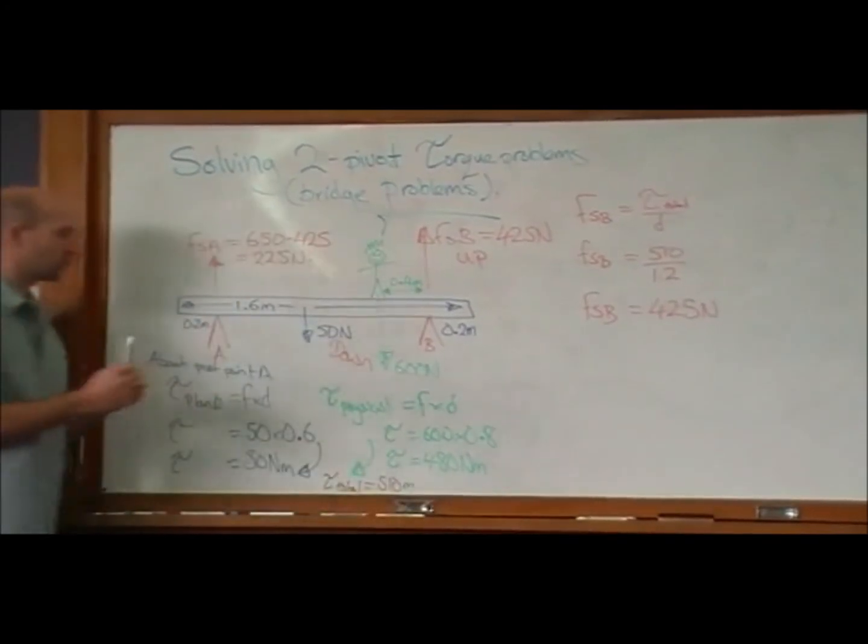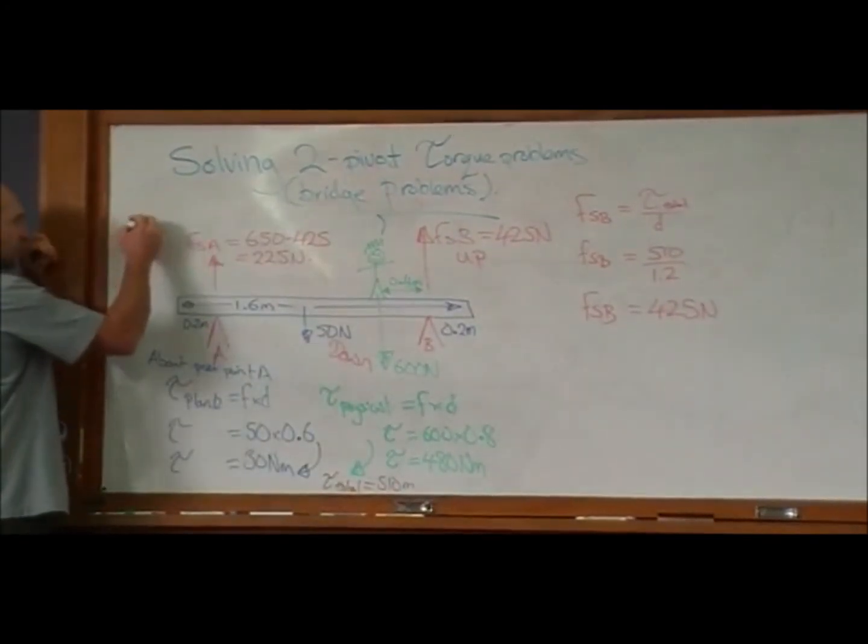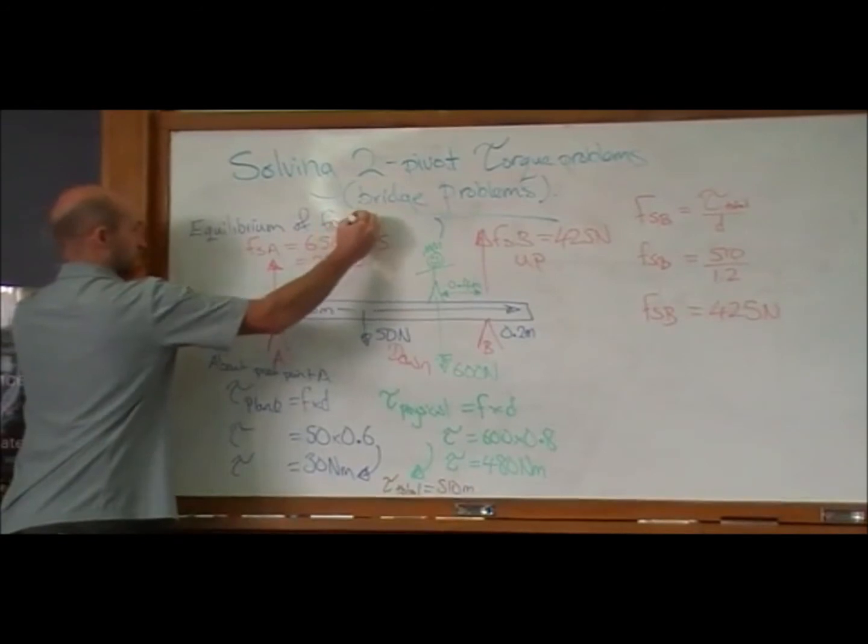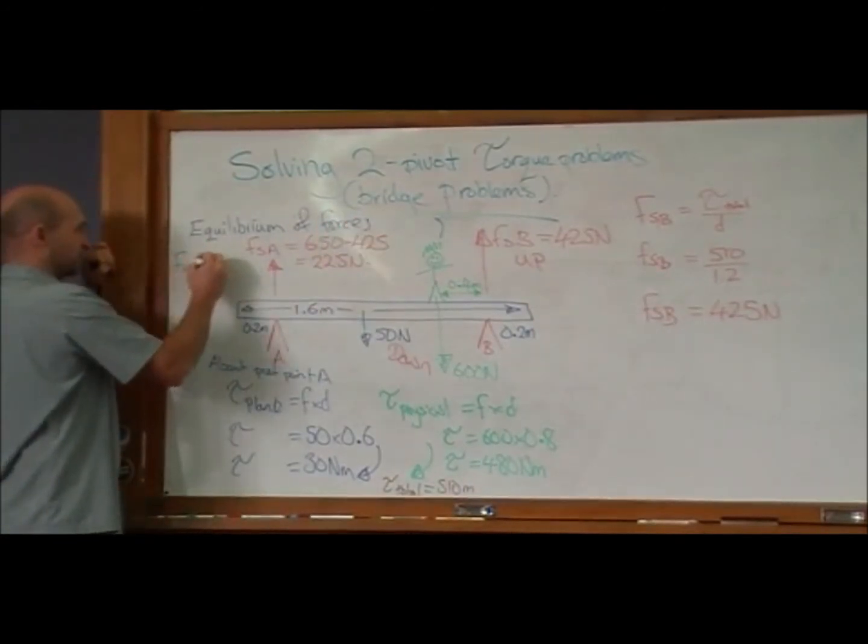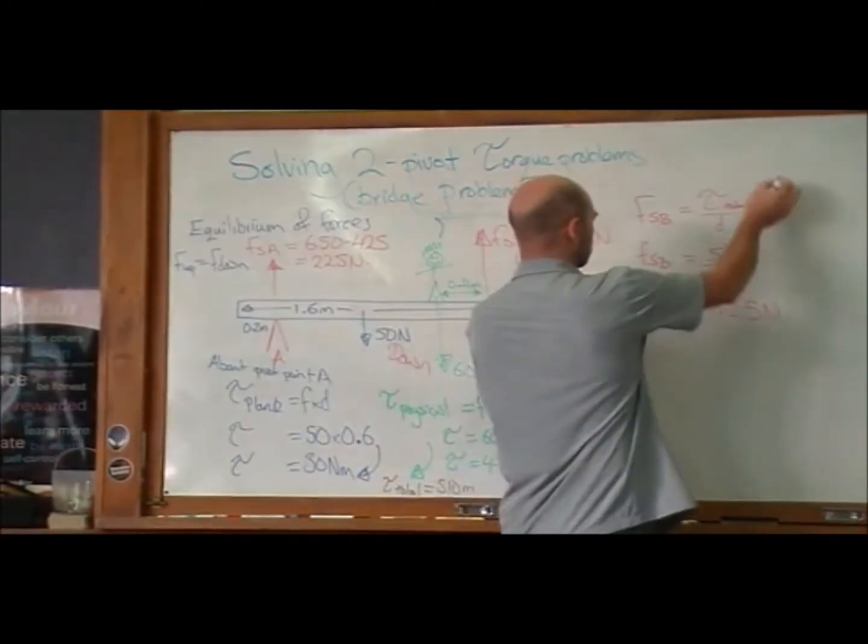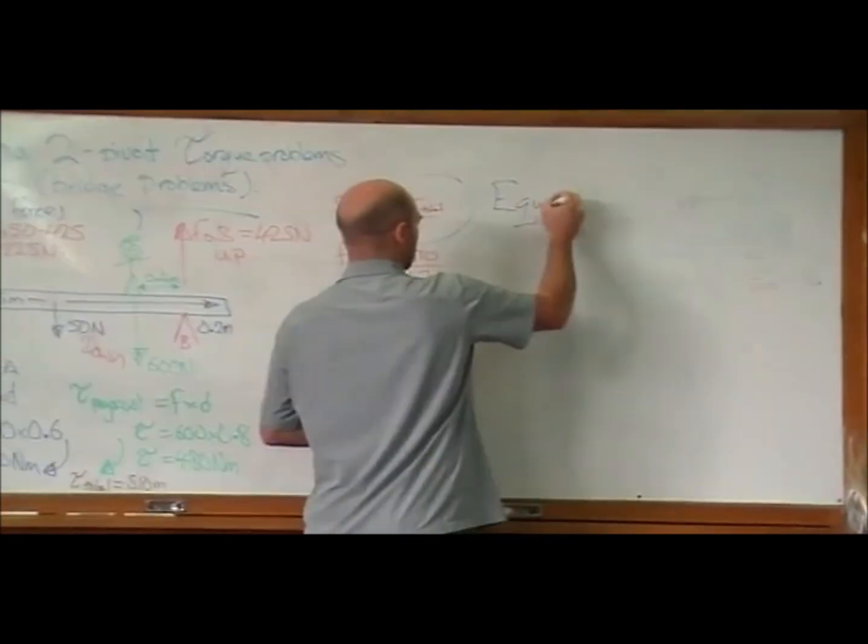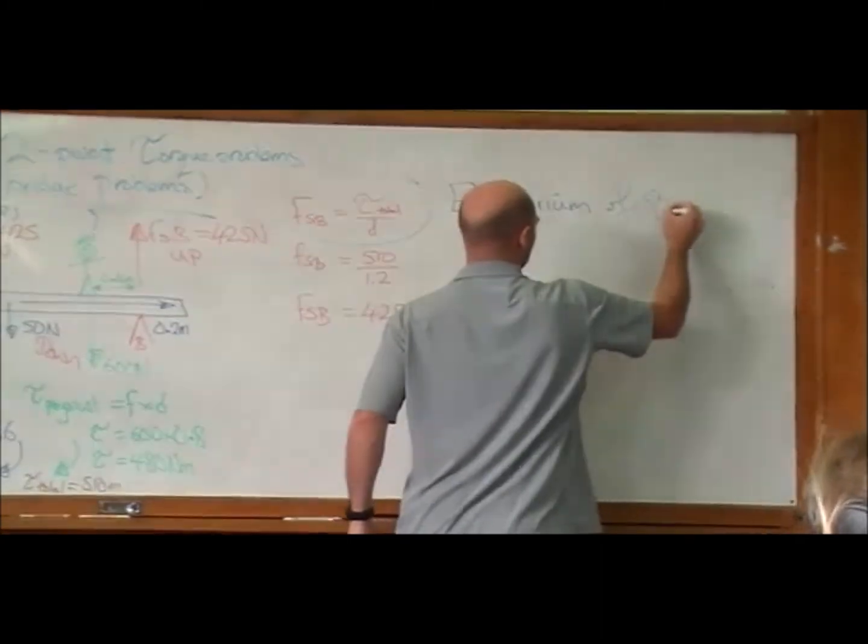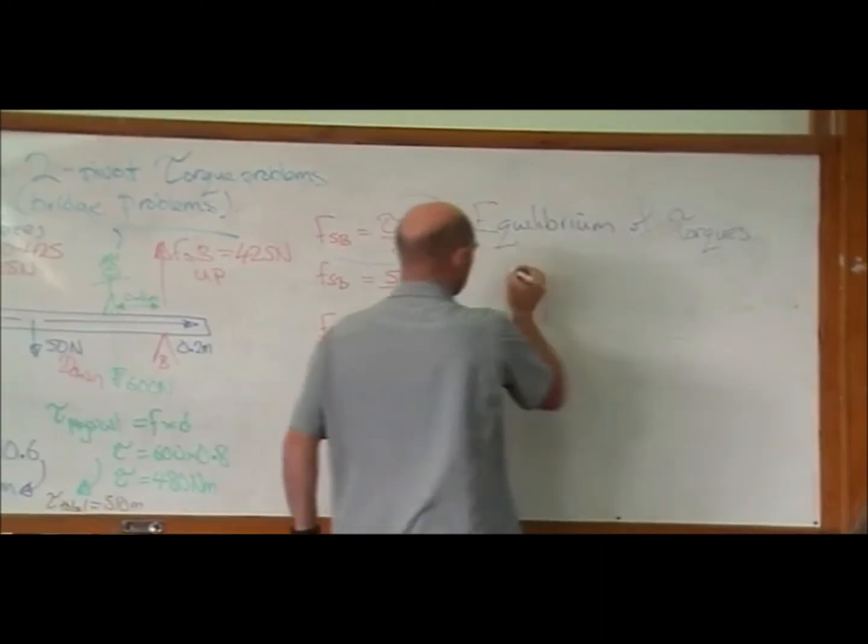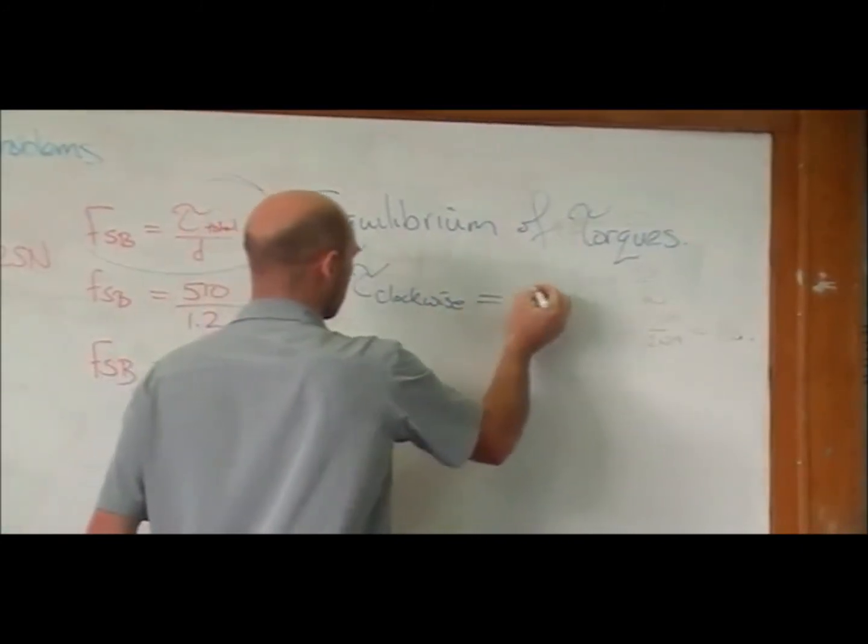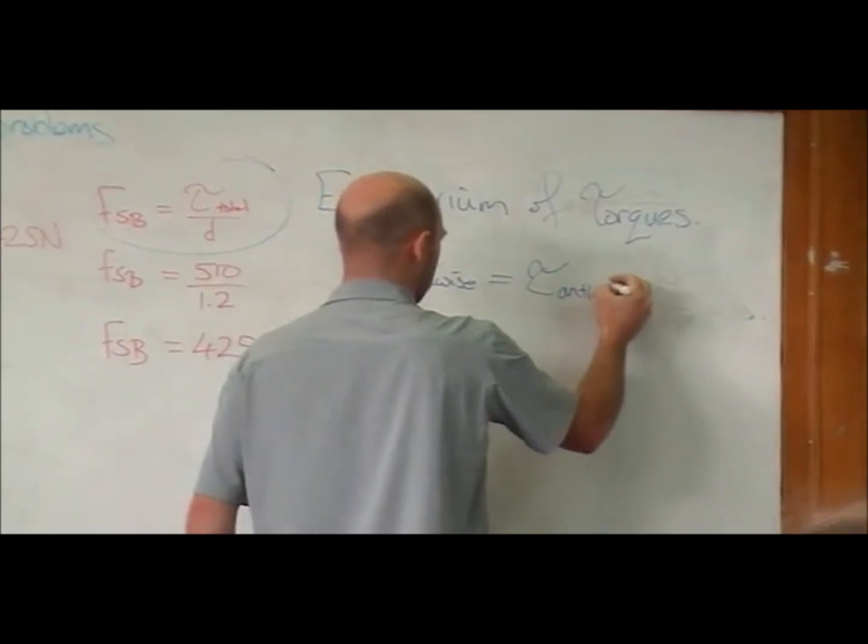And so, how did we work that out? This here is equilibrium of forces, which is that F up is equal to F down. How did we work this out? This is equilibrium of torques. So torque clockwise is equal to torque anti-clockwise.